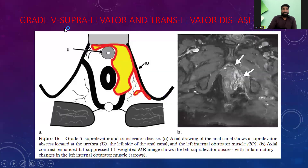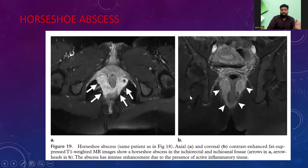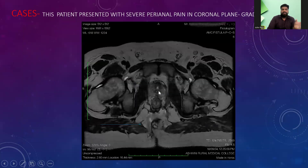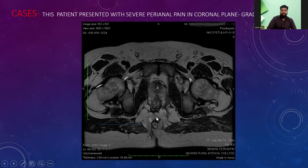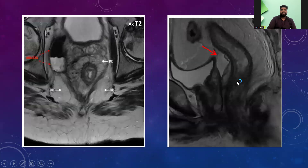Transsphincteric fistulas are most common. Grade 5 fistula is supraelevator, levator, and translevator disease, seen in sections going upward. In the coronal section it is better made out, with the levator ani muscle crossing it, confirming it is supraelevator. It can cause a horseshoe abscess as well, as seen in the horseshoe images. An actual patient presenting with severe perianal pain is shown in coronal and axial sections. The fat-suppressed images show the horseshoe abscess. Zoomed images and the sagittal view also show the Grade 5 fistula.